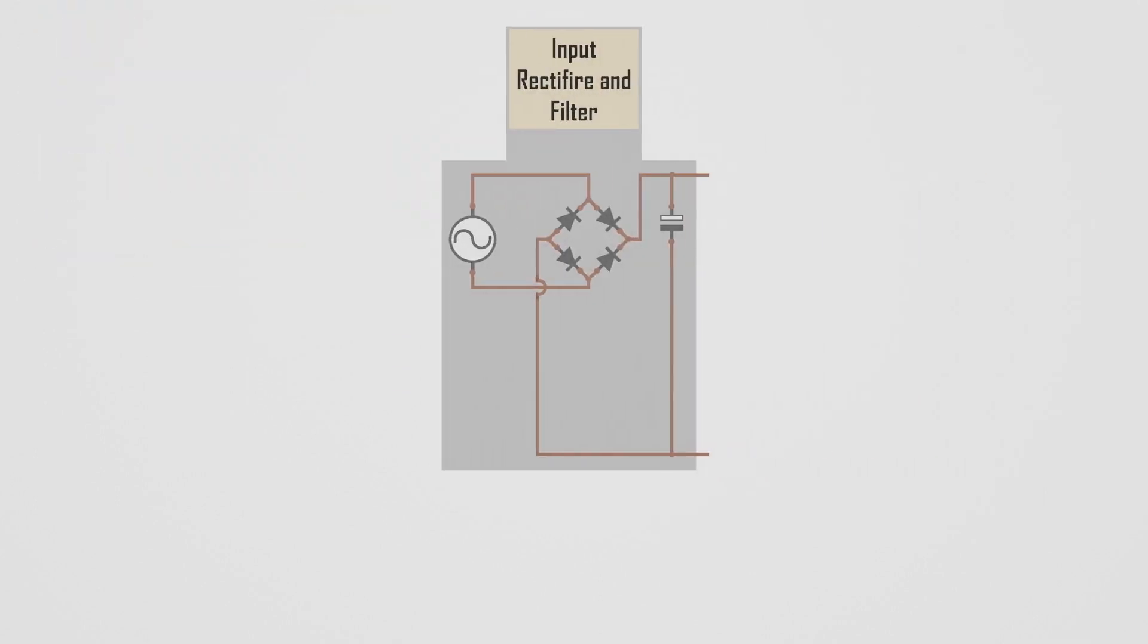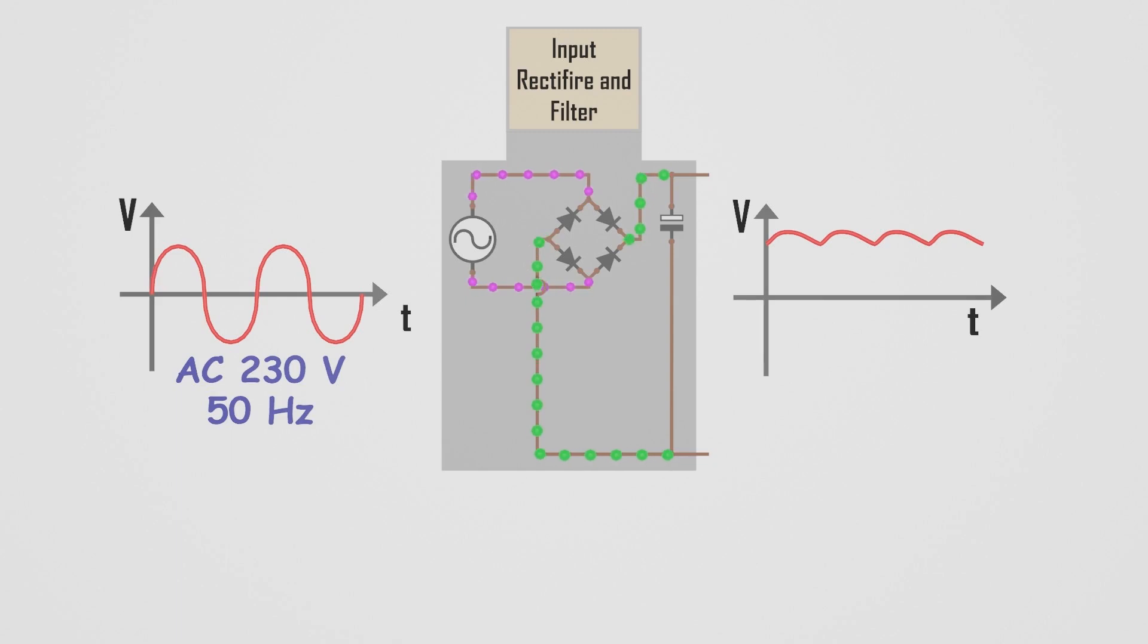The first step is to rectify the AC voltage using a diode bridge rectifier. This converts the AC voltage into a pulsating DC voltage, but it does not reduce the voltage. In fact, the peak voltage after rectification is higher than the AC voltage.